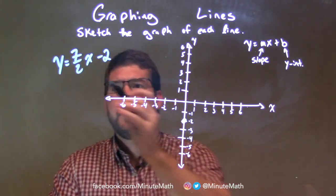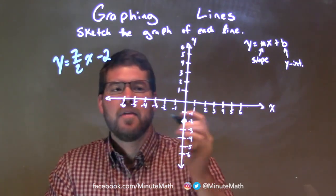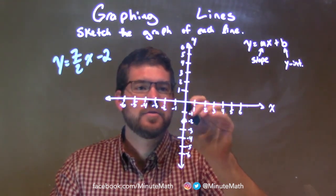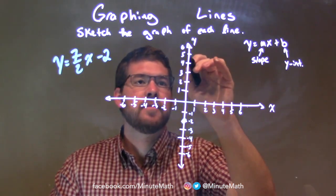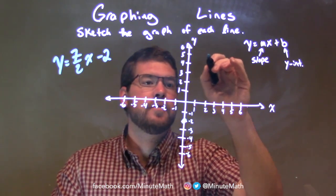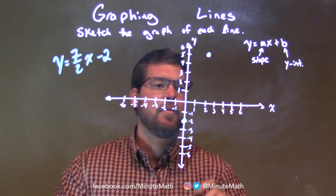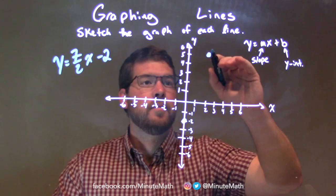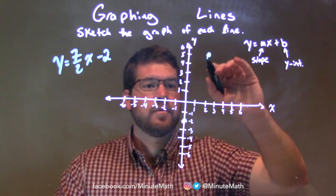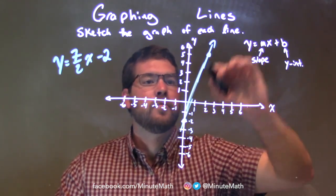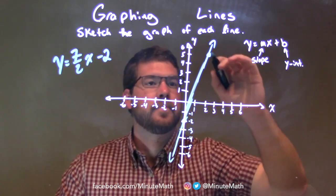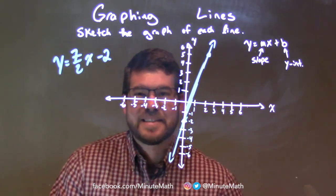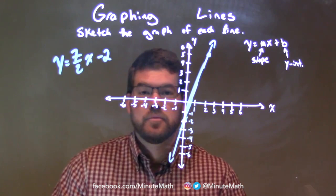They give us a slope — the m-value right here — 7 halves. That means we go up 7 units over 2. So we go up 7 units: 1, 2, 3, 4, 5, 6, 7, over 2 units: 1, 2. There we have it, we have a point at 2 comma 5 right there. And now we have two points, we can make a line. There we go — a little freehand, but it's okay. And so now we have a quick sketch of our equation y equals 7 halves x minus 2.